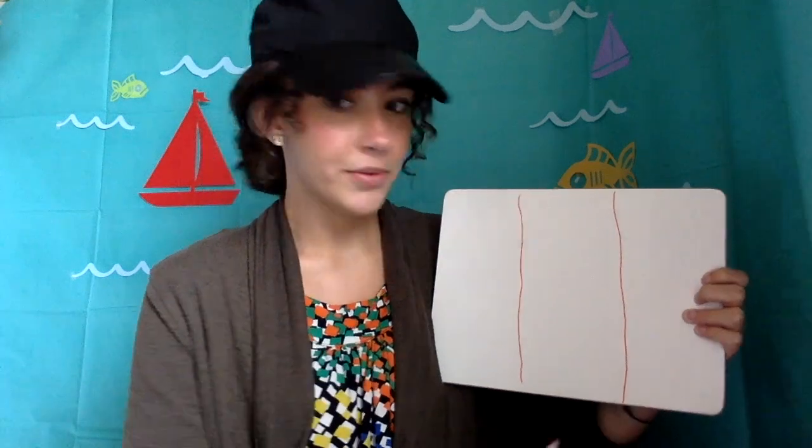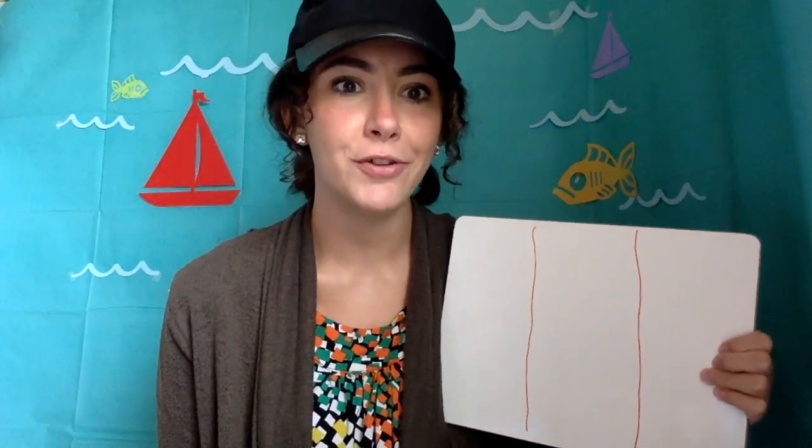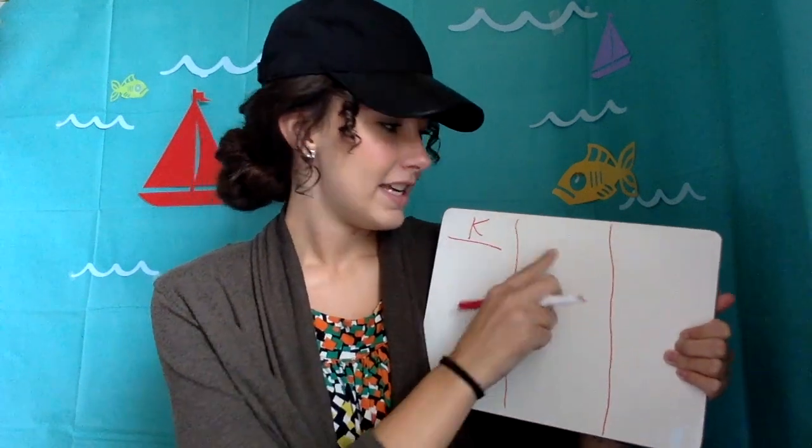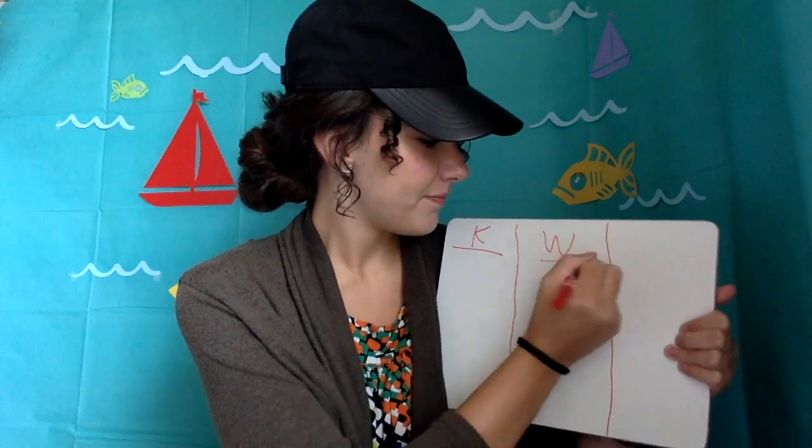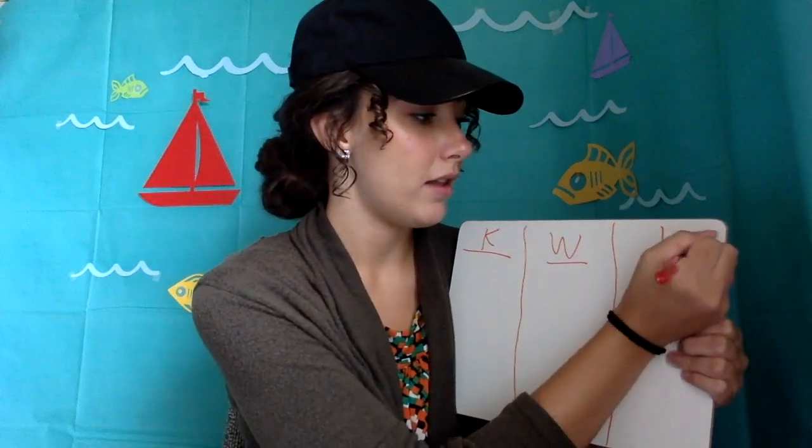For today, what we are going to do is make a KWL chart. Your teacher should have already taught you about what a KWL chart is, but you are going to need a piece of paper and a pencil, or your whiteboard and a marker. Today, I'm going to be using a whiteboard and a marker. To make a KWL chart, you need three parts, so you're going to draw two lines down the middle. It's called a KWL chart — so the letter K goes in the first box, W goes in the second box, and L goes in the last box.